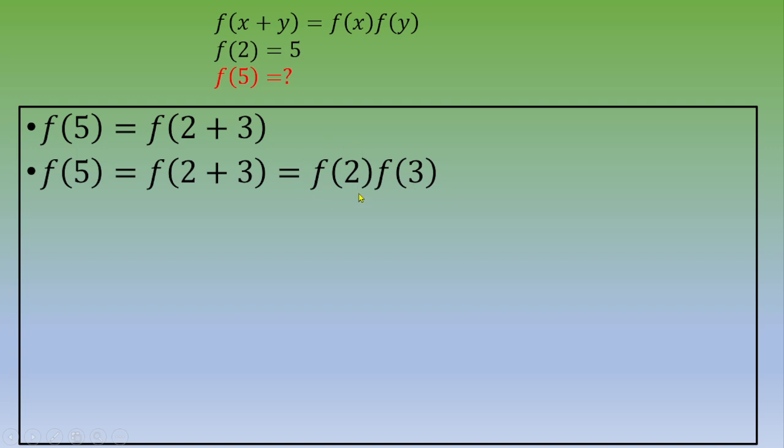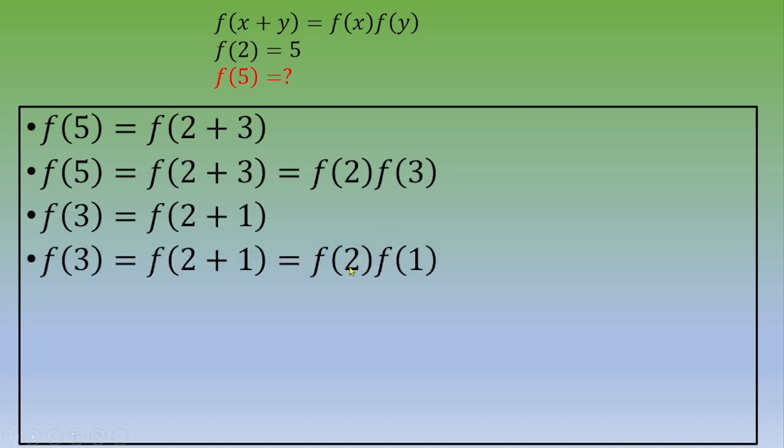We know the value of f of 2. So now we would like to expand f of 3 and write down f of 3 as a function of f of 2. So f of 3 is f of 2 plus 1. According to this condition, this is f of 2 times f of 1.